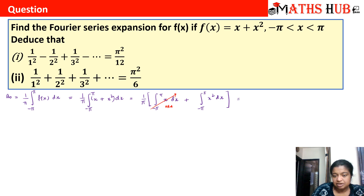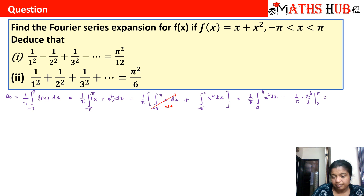We just need to integrate the x² term. Using the even function property, this becomes 2/π times the integral from 0 to pi of x² dx. Integrating, we get 2/π times [x³/3] from 0 to pi, which gives 2/π × π³/3. One pi cancels and we get a₀ = 2π²/3.